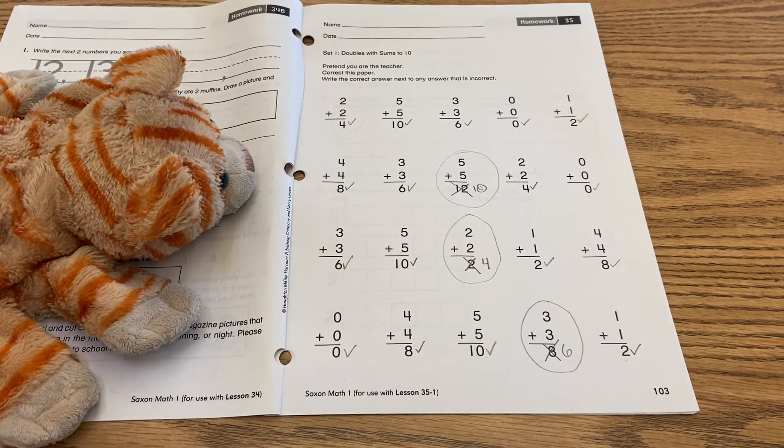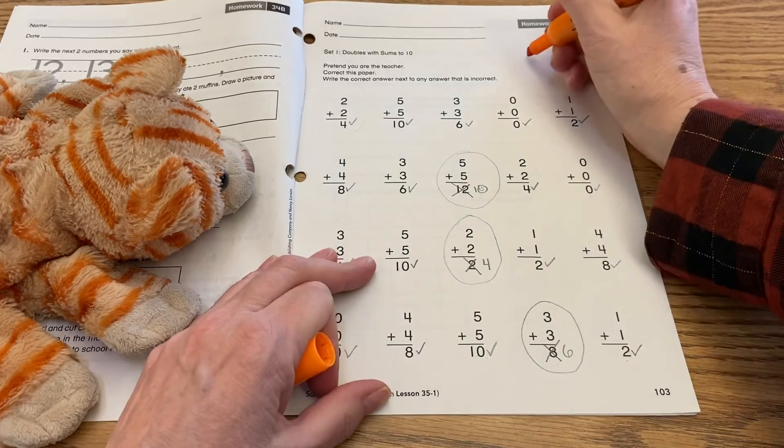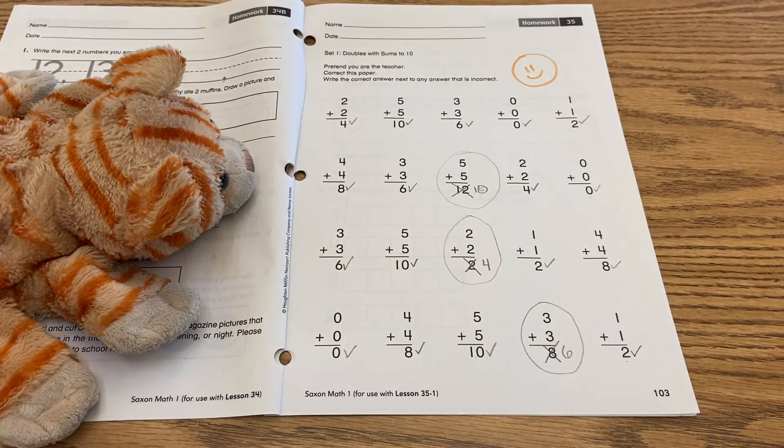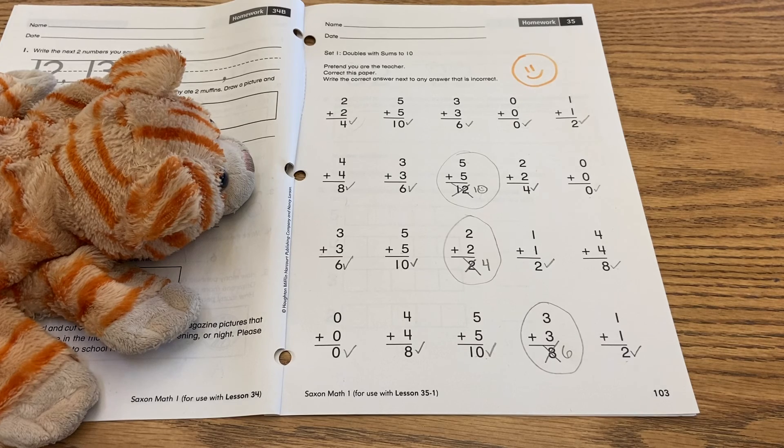And that's it. So CaliCat did pretty good. Only got three wrong. And we're going to give ourselves an exit ticket right there. And that's it for this lesson. I hope you enjoyed being the teacher today. Now you know how I do my job.